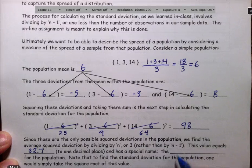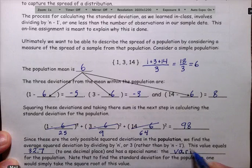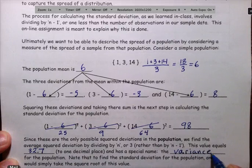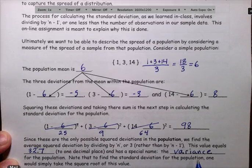This is known as the variance. V-A-R-I-A-N-C-E. This is the variance for the population.